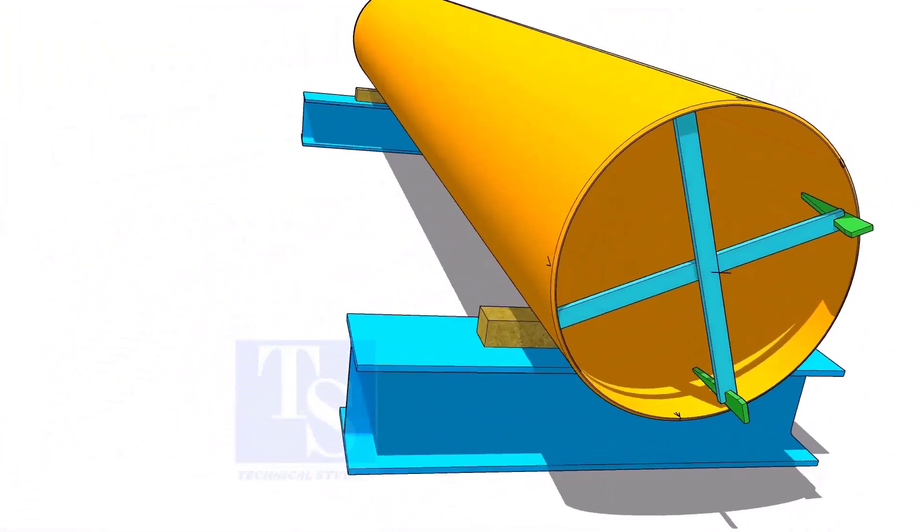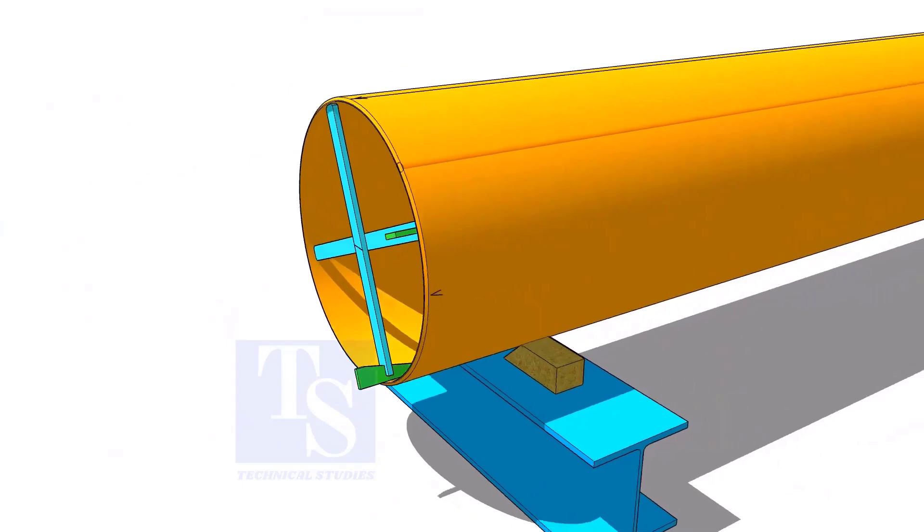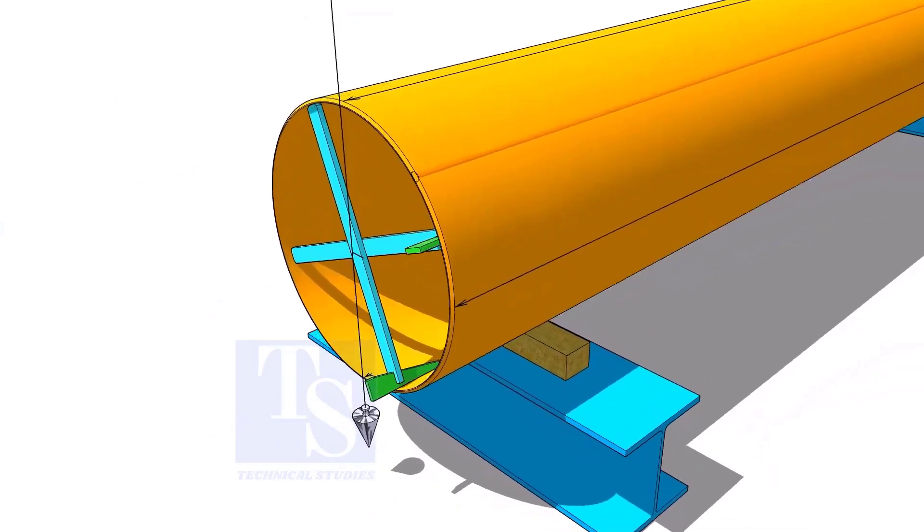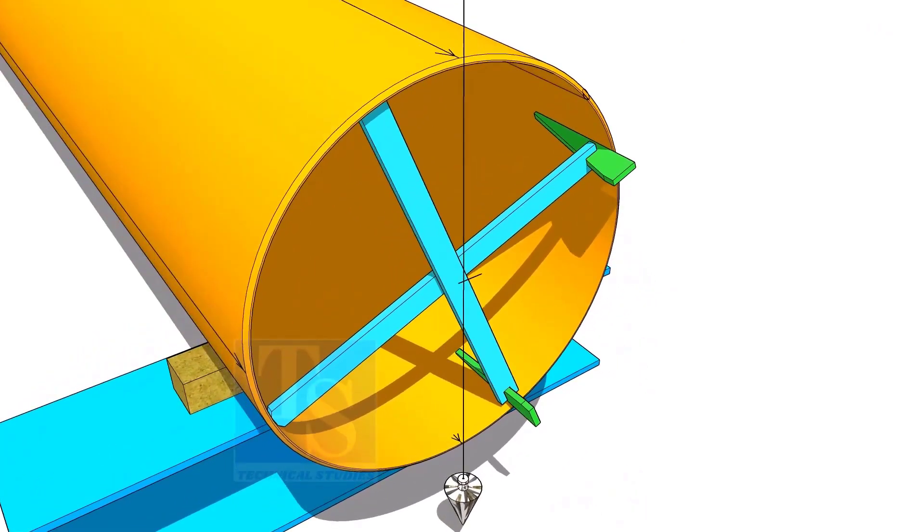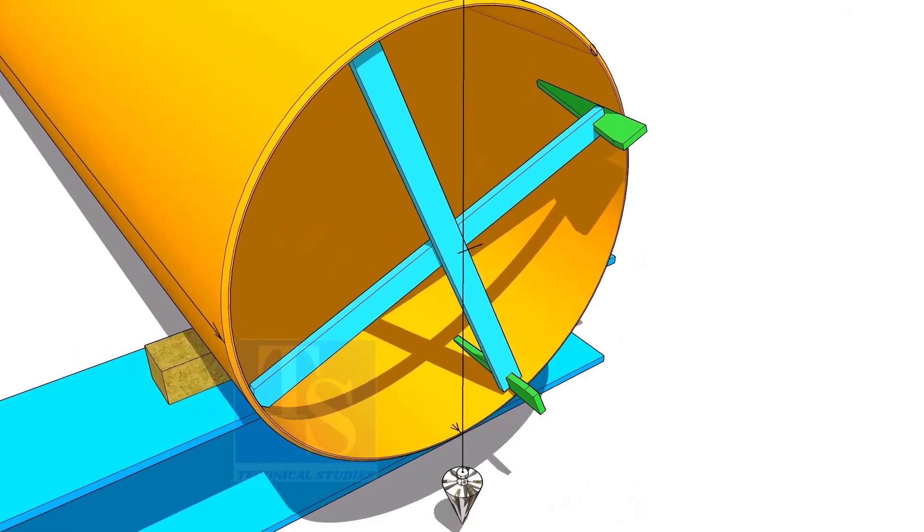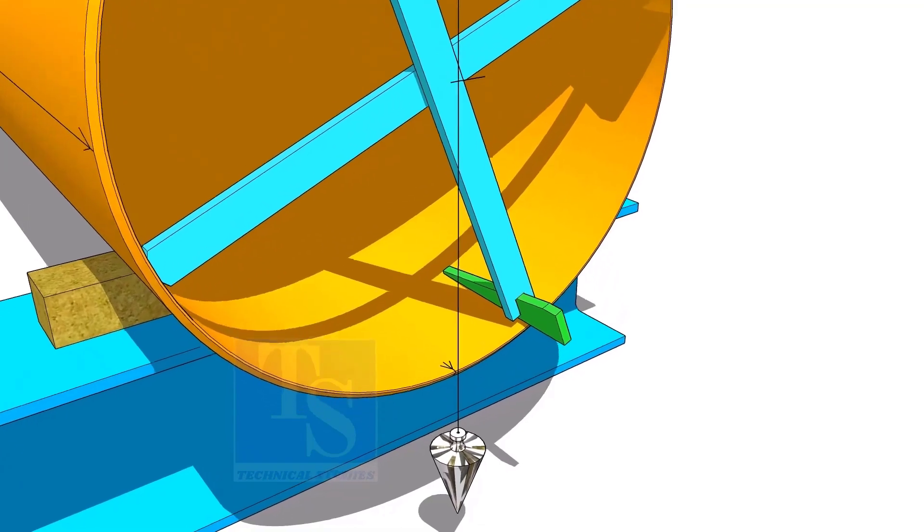Draw all the center lines. Put the plumb on the top side line. If the string passes through the line on the bottom, the lines are correct.